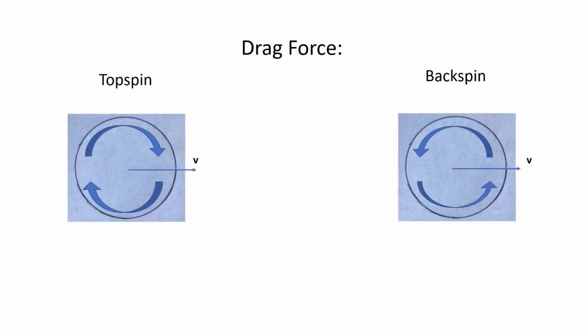Secondly, we look at the air resistance, or drag force, Fd, which is equal to negative half rho, the density of air, times A, the middle cross-sectional area of the ball, times V squared, the magnitude of the velocity of the ball squared, times Cd, the drag coefficient, times unit vector parallel to V.